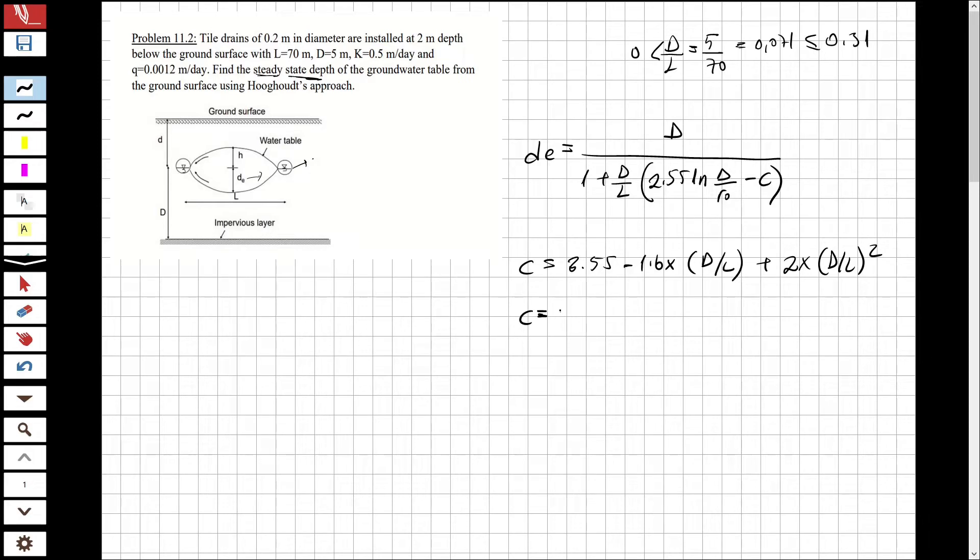For c: 3.55 minus 1.6 multiplied by 0.071 plus 2 multiplied by 0.071 square. c will be equal to 3.44. This is the c value. So let's write c in its own place and find the equivalent depth.